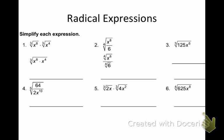Let's try these 6 problems together. Simplify each expression. Number 1: the cube root of x to the 8th times the cube root of x to the 4th. I'm going to multiply them first. What's x to the 8th times x to the 4th? When I multiply, I add exponents. So I get the cube root of x to the 12th. Now I divide — how many times does 3 go into 12? My answer is x to the 4th.